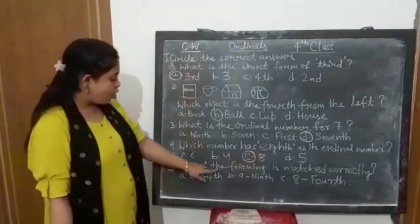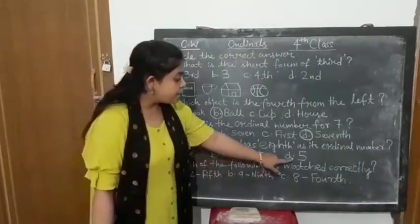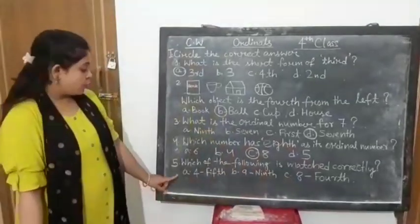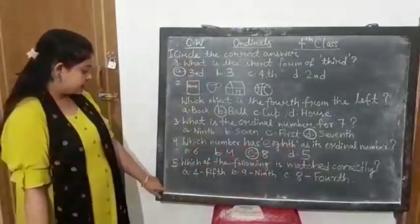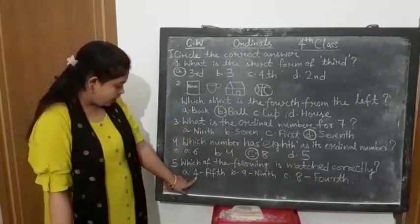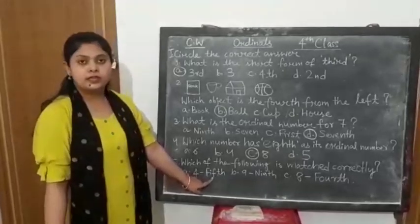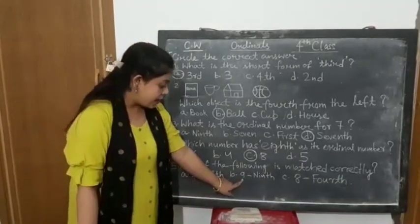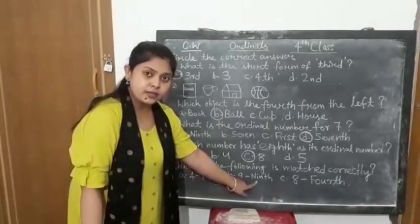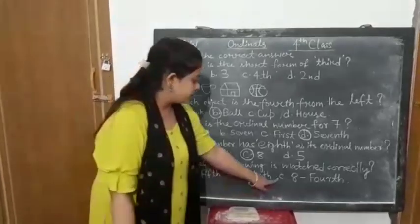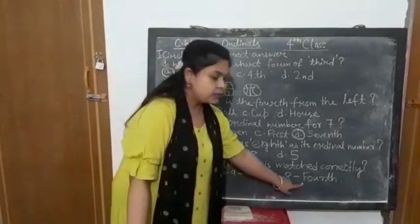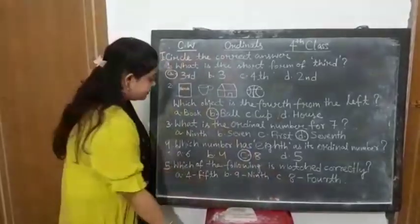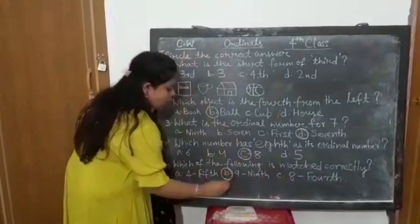Now the last one. Which of the following is matched correctly? Three options are given. You have to match which answer is correct. See the first one? A: Four - Fifth. Is it matching? No, it is not matching. B: Nine - Ninth. Is it matching? Yes, it is matching. C: Eight - Fourth. No, it is also not matching. So what is the answer here? The answer is B. Circle option B.